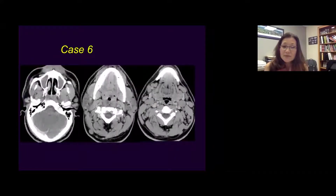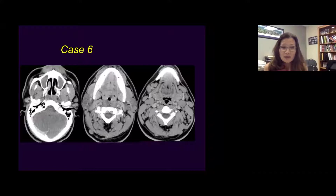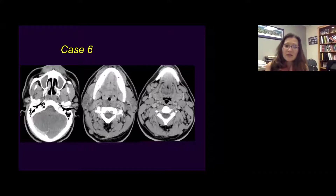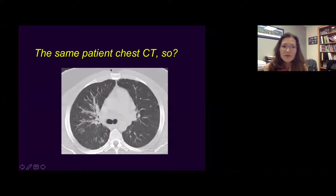Another diffuse bilateral case showing a pattern of systemic disease. Think about lymphoma, leukemia, sarcoidosis, HIV. This is a case of sarcoidosis. Looking at the same patient's chest CT, notice changes associated with sarcoidosis.